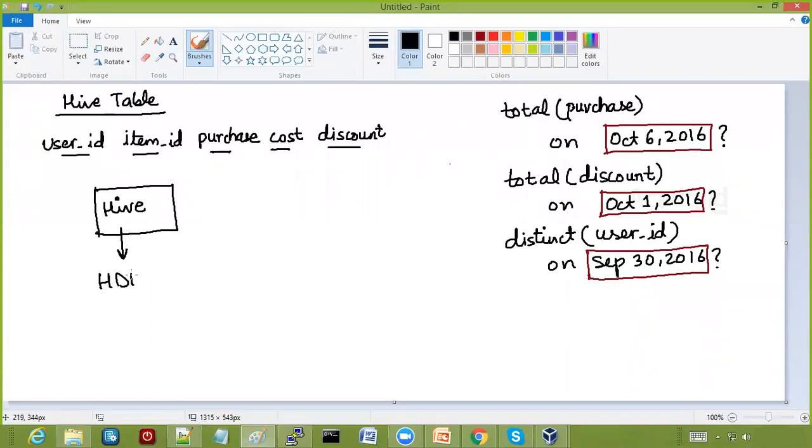because the content of the hive table is stored in the HDFS directory. Every time you insert into the table, a new file is going to get created, then again new file, then again new file. And assume that you are running on a daily basis, so there's a possibility that new files will be created every day. Obviously the size of the table is going to grow. That's fine. So the number of files are also going to increase.